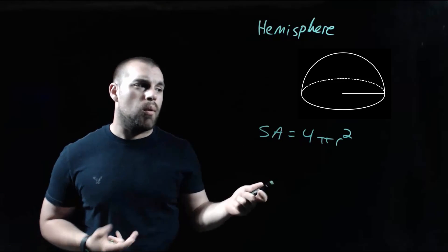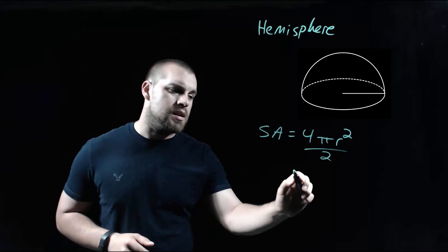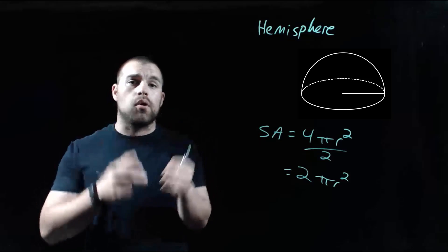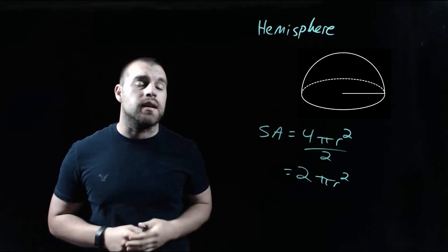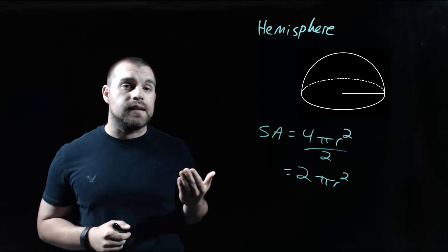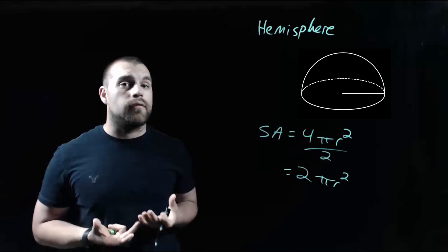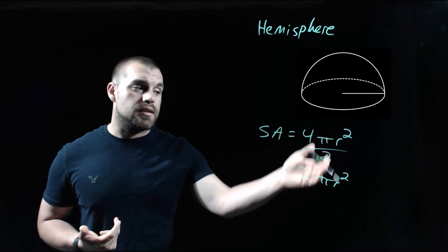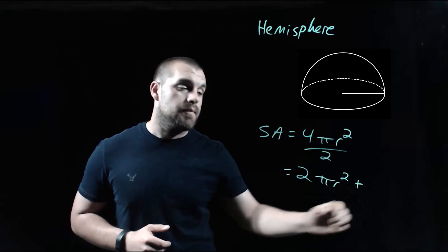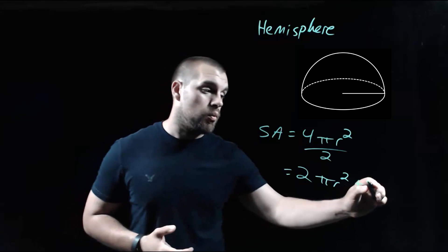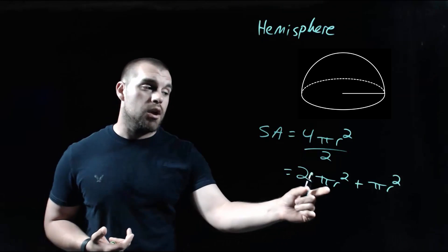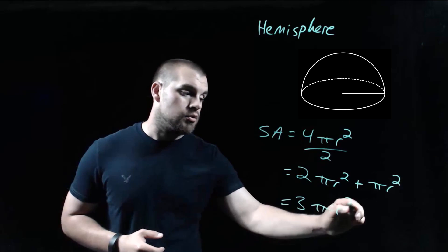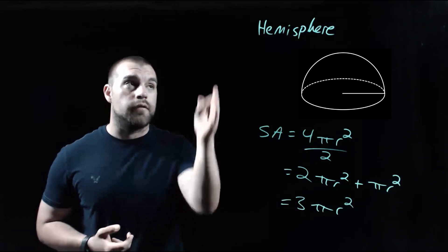For a whole sphere, the surface area is 4πr². But with a hemisphere, we don't have the full sphere, we've only got half of it. So we take this and split it in half: 4 divided by 2 is 2, giving us 2πr². That takes care of the domed portion. But there's another face created when we cut this sphere in half - a circle. We also have to account for the area of that circle, which is πr². So we have 2πr² plus πr², which equals 3πr². That's the surface area formula for a hemisphere.